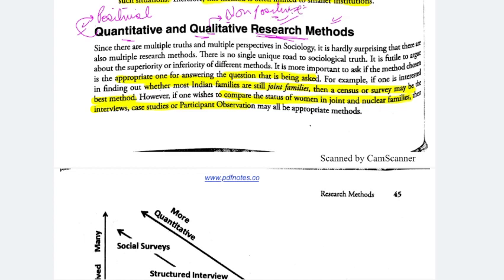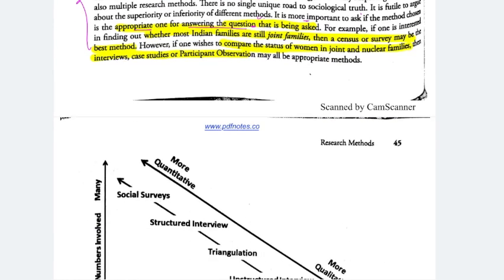Let's see what is written in the book. It is more important to ask if the method chosen is the appropriate one for answering the question being asked. Since there are multiple truths and multiple perspectives in sociology, it is hardly surprising that there are also multiple research methods. We cannot follow just any one method — what is important is knowing that the method chosen is appropriate to answer our questions.